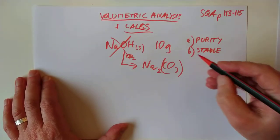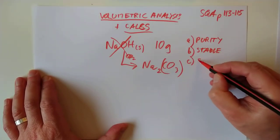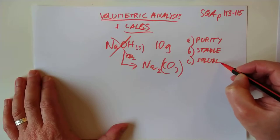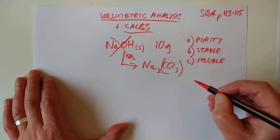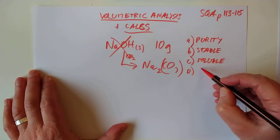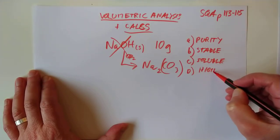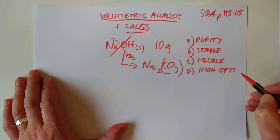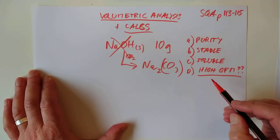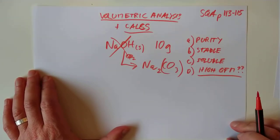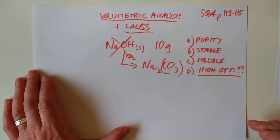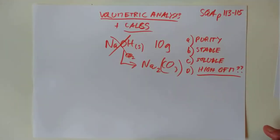In other words, not absorb water and not react with CO2. So, stable over time. The SQA want you to know that they have to be soluble. I would never have guessed that one. I'd want to make a solution out of it. And the last one the SQA want you to know about is, ideally, it has a high GFM. At first glance, what? Why would you care about the GFM?